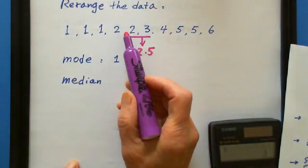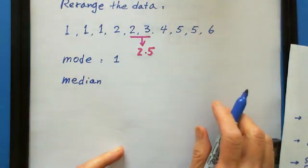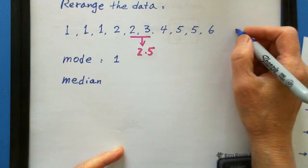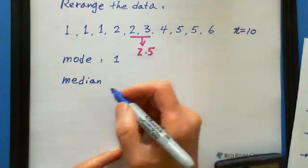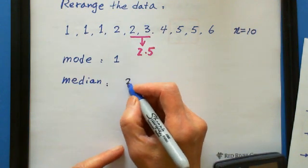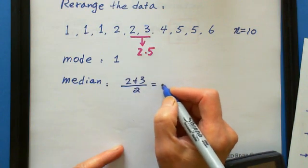That's why we put 2 plus 3 divided by 2. Because it's an even number, because n equals 10, the median equals 2 plus 3 divided by 2 which is 2.5.